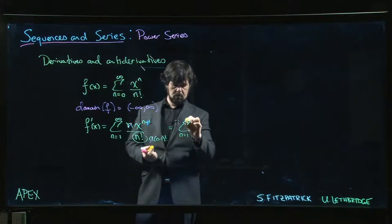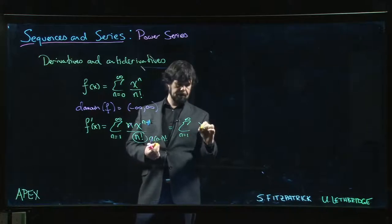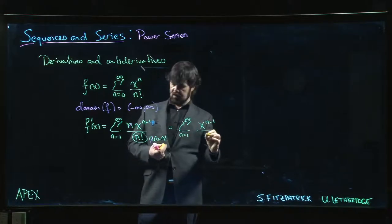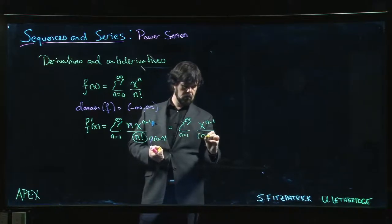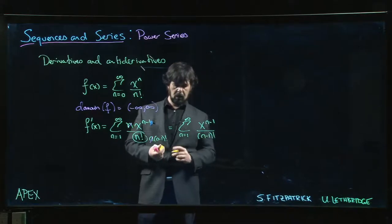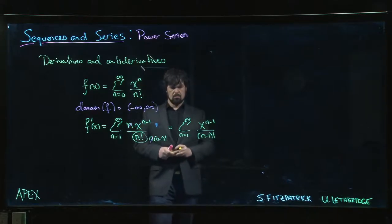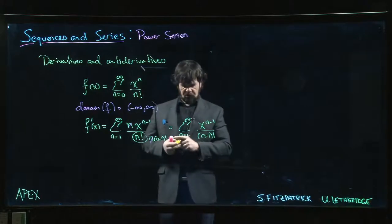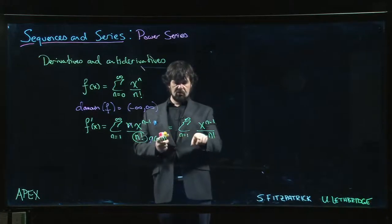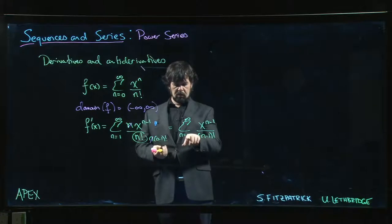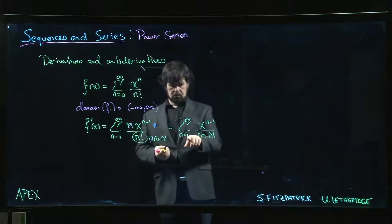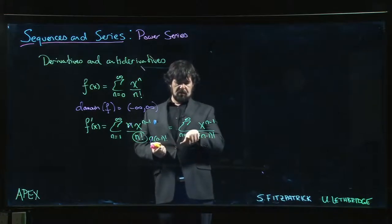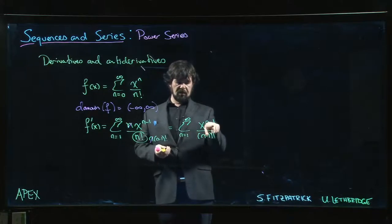If we clean it up, we've got x^(n-1) over (n-1) factorial. But just like we did in the previous examples, we could shift the index. It would be nice if the sum started at 0.